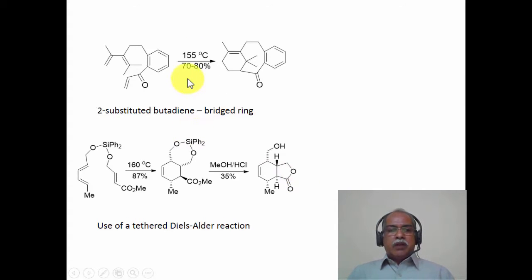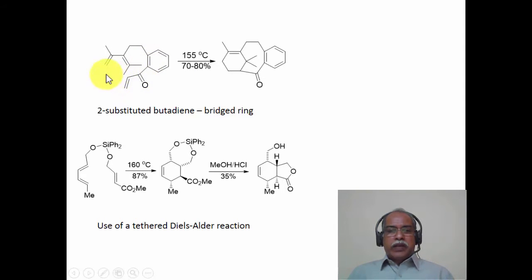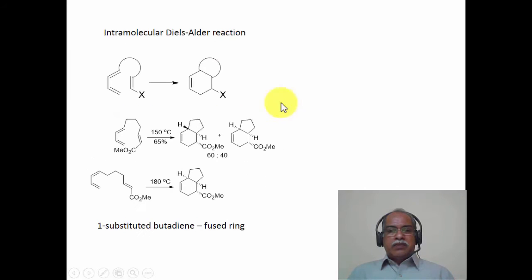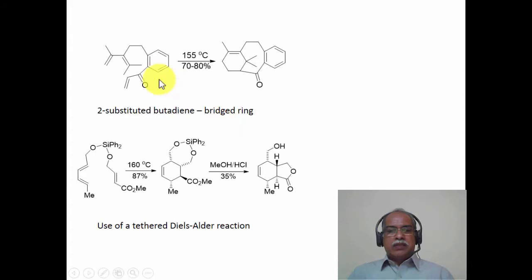Here is another example of an intramolecular Diels-Alder reaction where the pendant group is now attached at the two position of the diene, not at position one. When the pendant group is attached at position two of the diene with this length of dienophile, there is only one possible orientation. The dienophile orients in this fashion, and the reaction gives a bridged bicyclic adduct, whereas the earlier one-substituted examples gave fused bicyclic adducts.